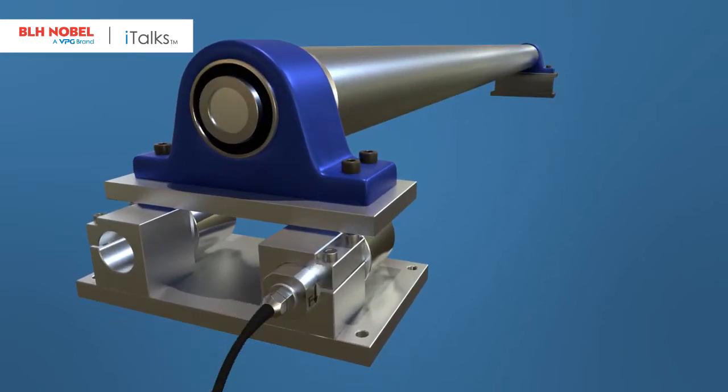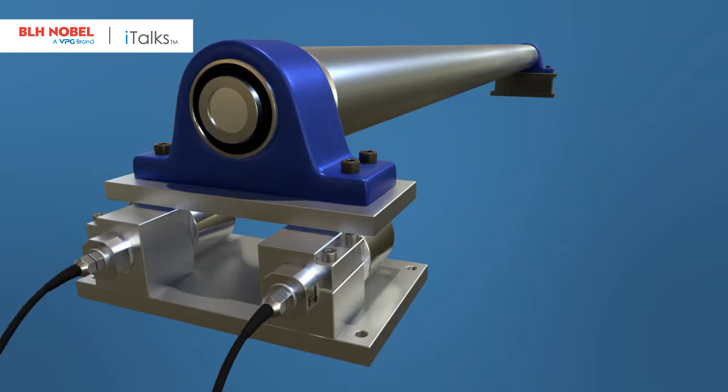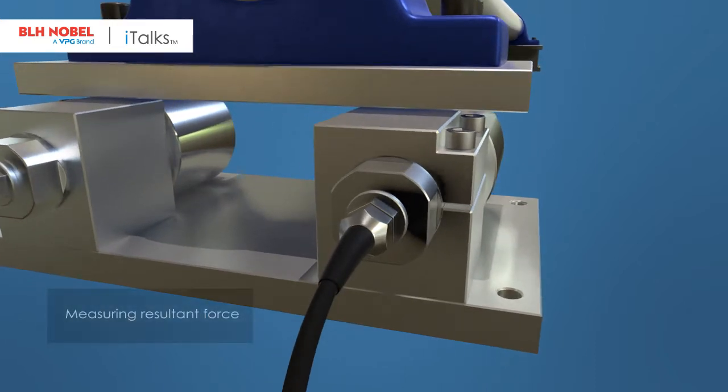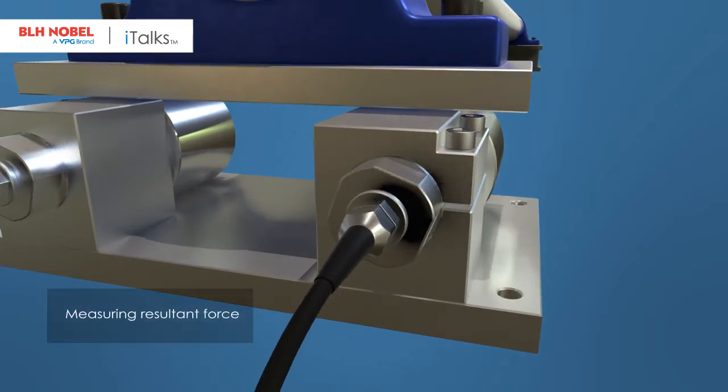KISS load cells are temperature compensated and have a high level of ingress protection that makes them ideal for use in harsh environments. Setting up the FMU is easy.